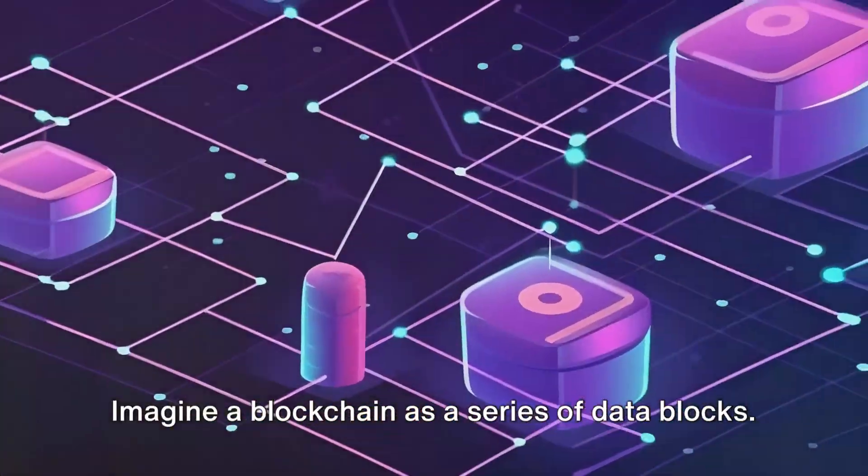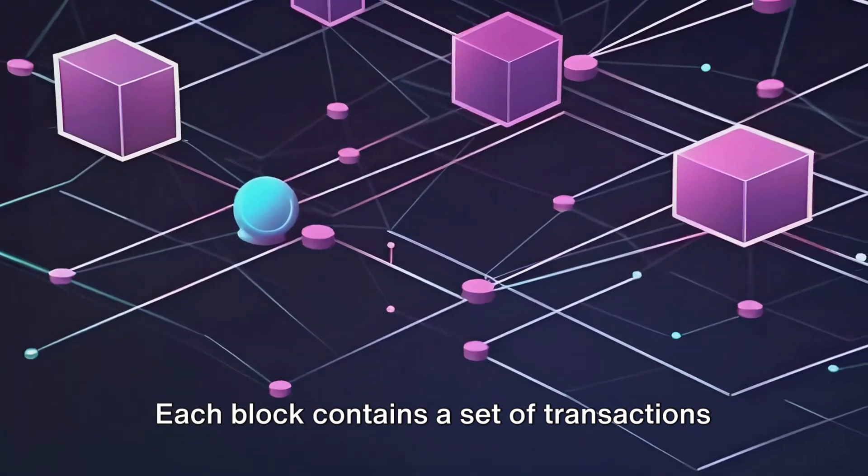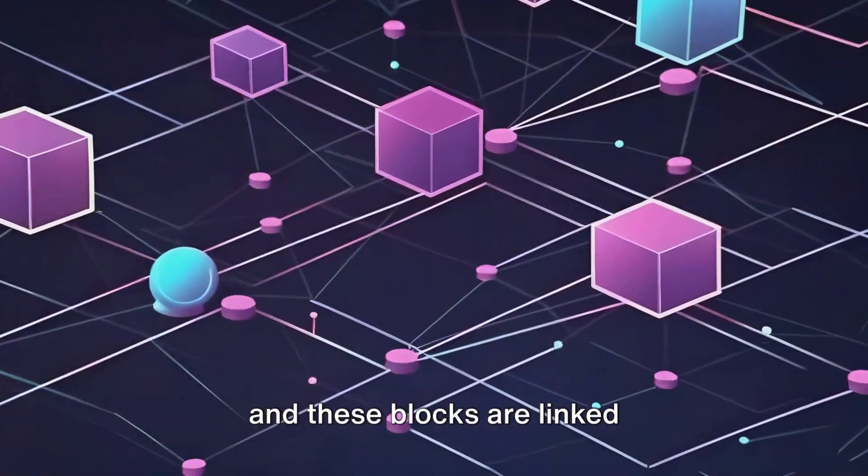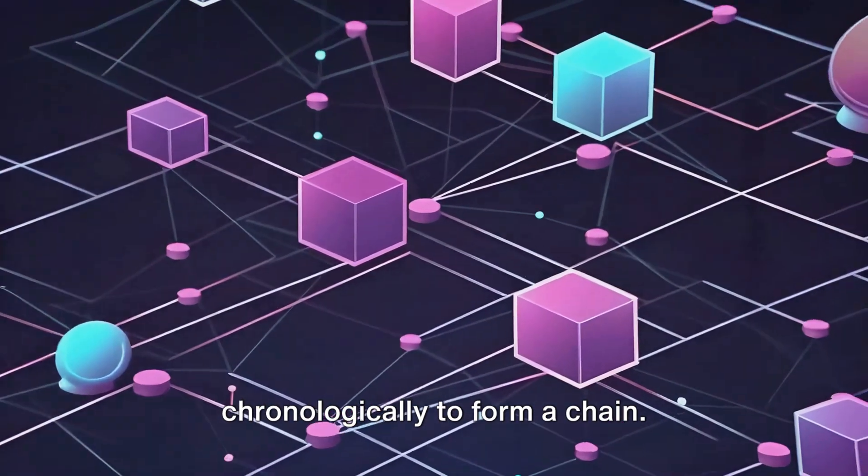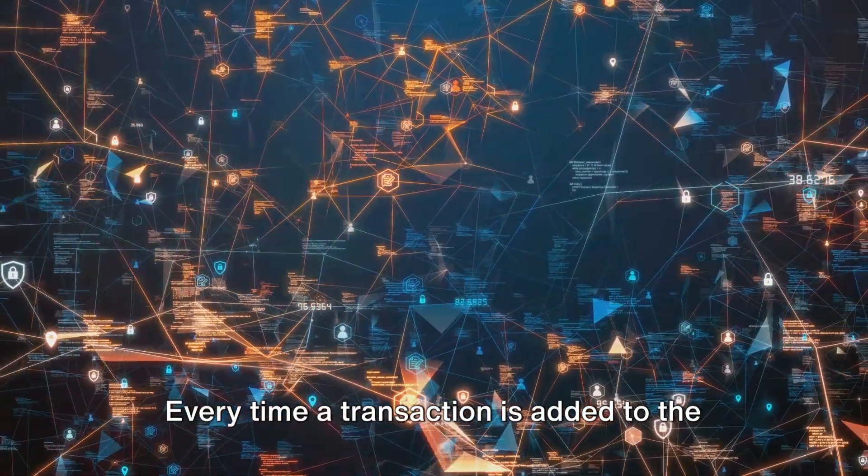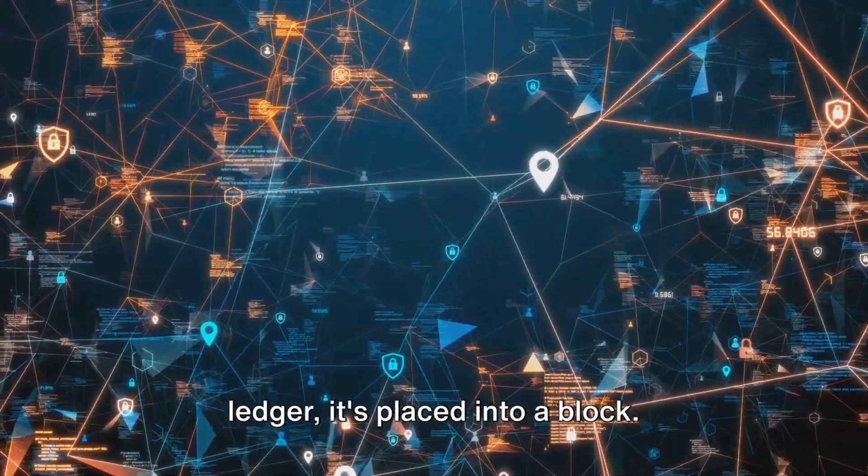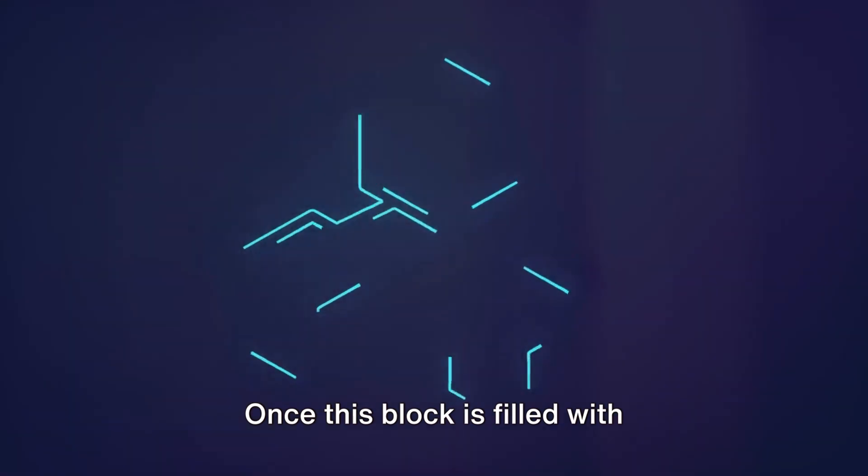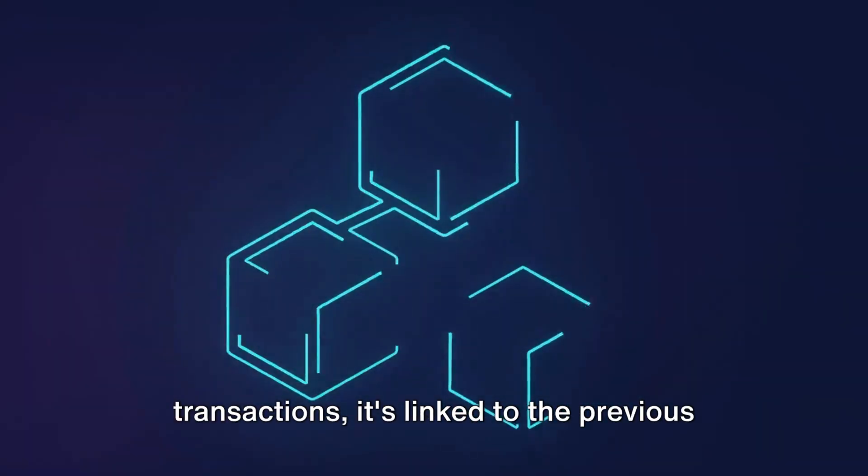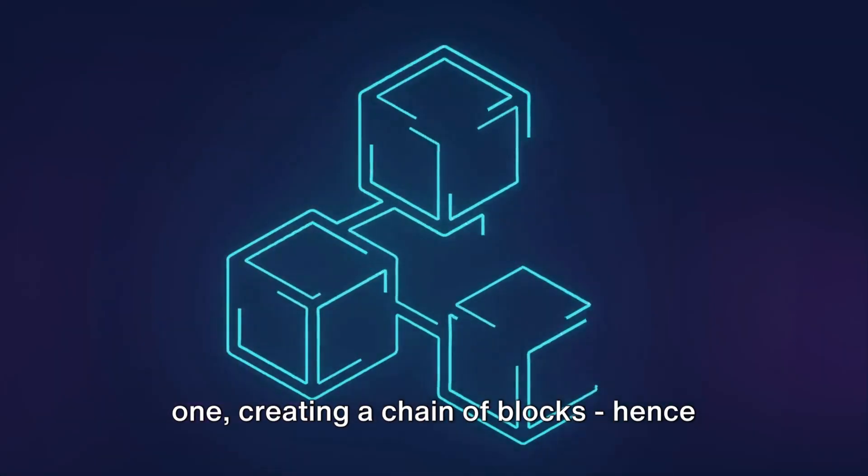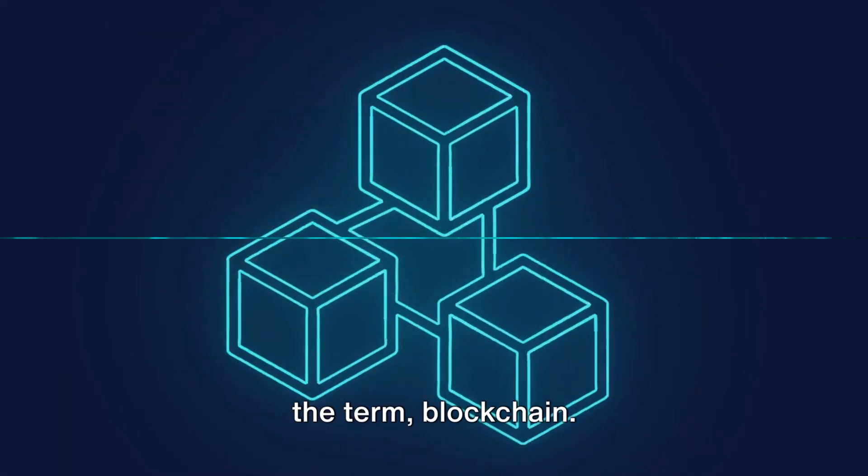Imagine a blockchain as a series of data blocks. Each block contains a set of transactions, and these blocks are linked chronologically to form a chain. Every time a transaction is added to the ledger, it's placed into a block. Once this block is filled with transactions, it's linked to the previous one, creating a chain of blocks, hence the term blockchain.